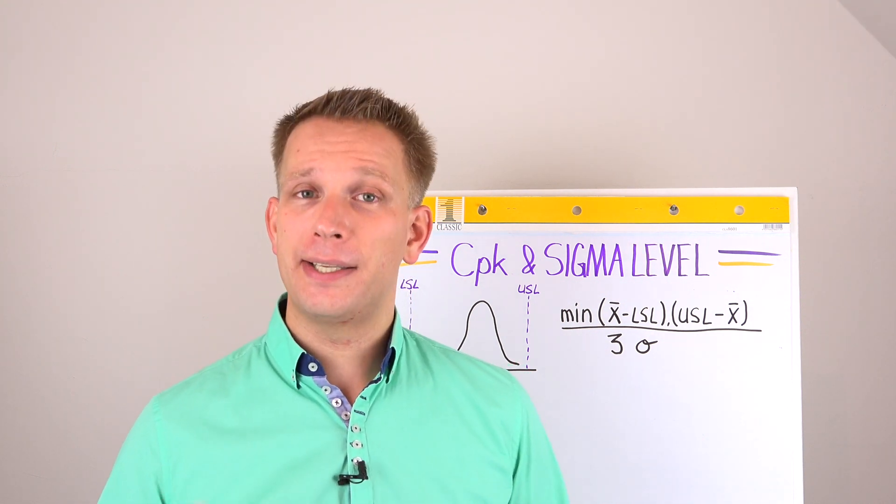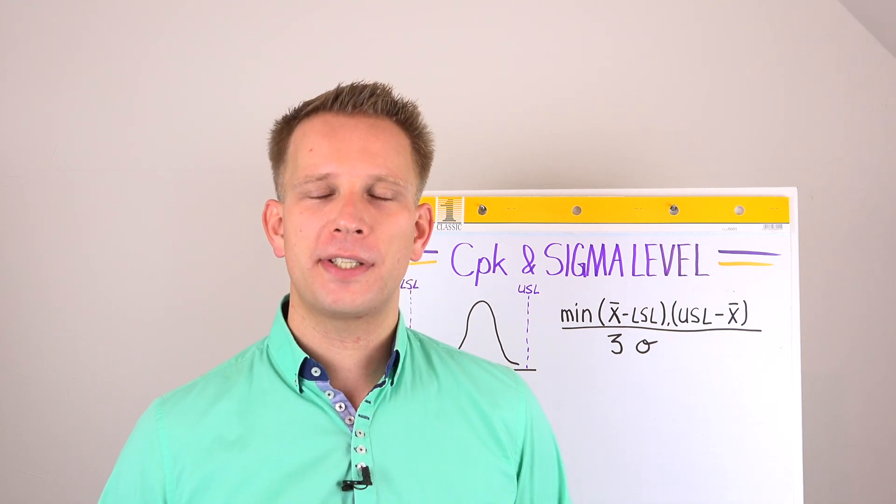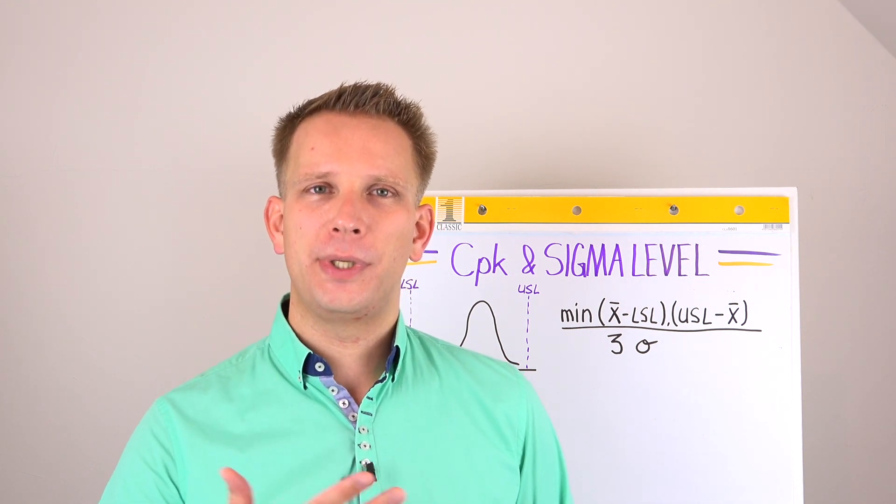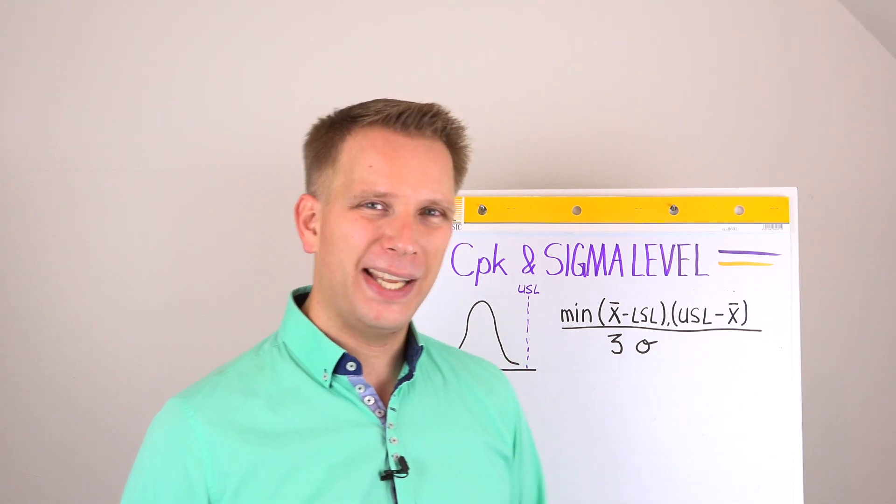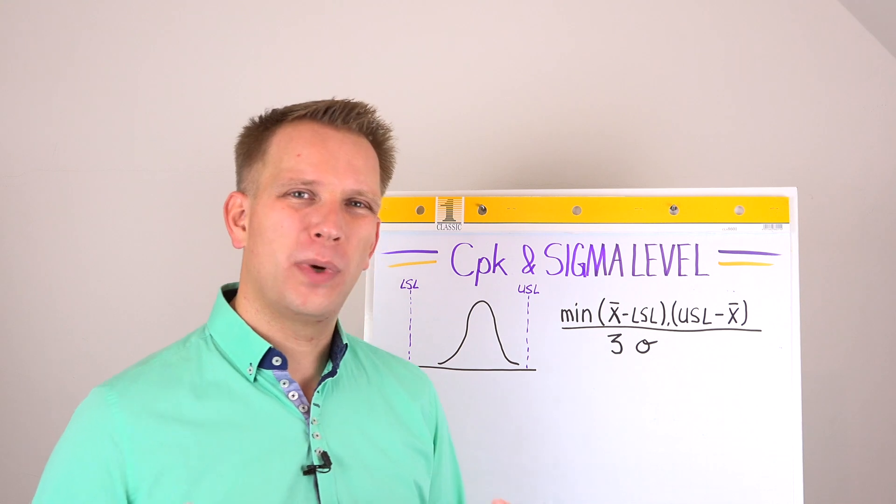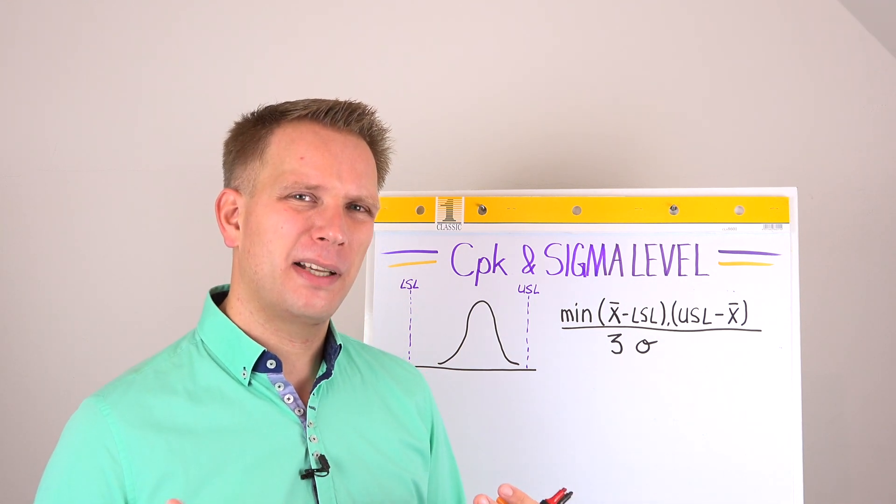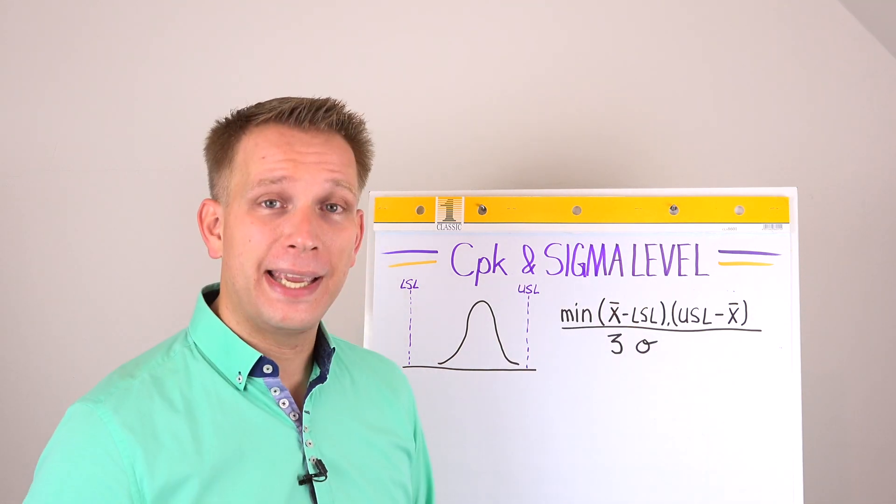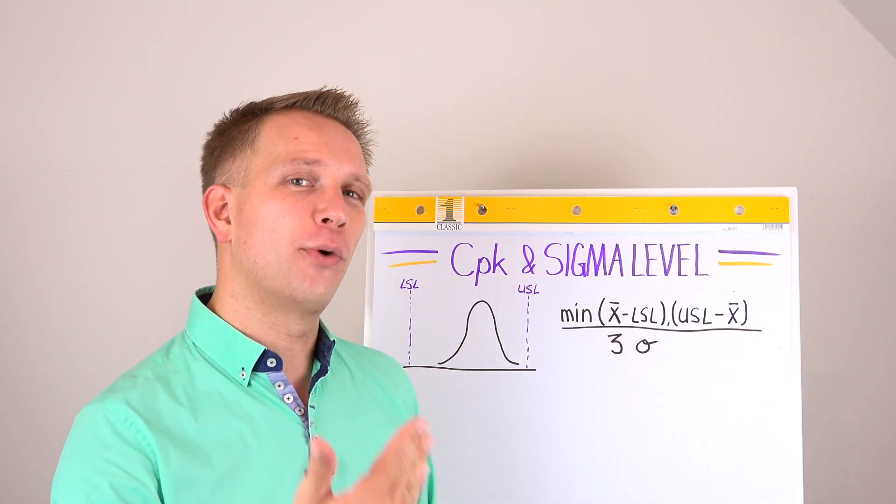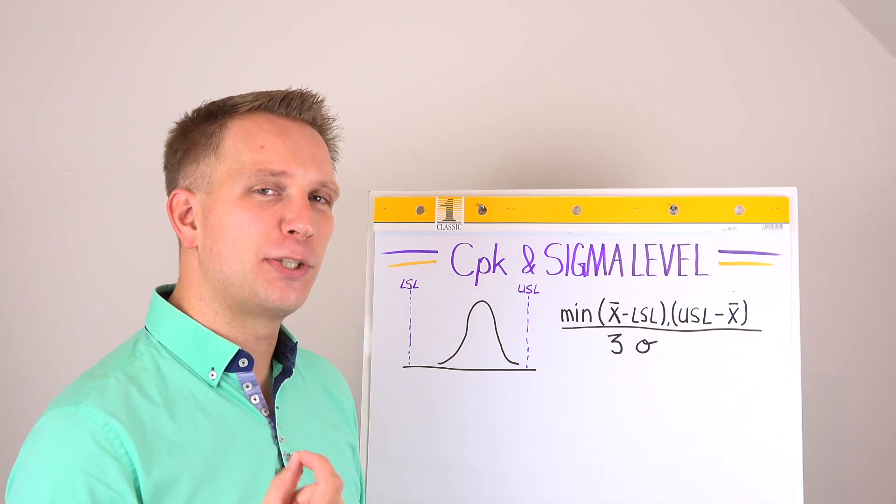Today's topic is Six Sigma or the sigma level of your processes and how this compares to the CPK or process capability of your processes. For that, let's first check what is this sigma, which is standard deviation level, how to check it, how is the formula for CPK. And I think that when we go through it, you will already see the link between them.